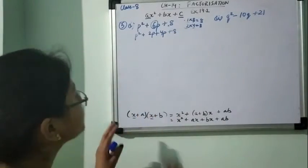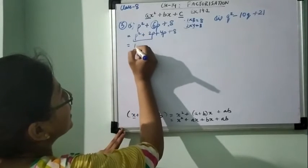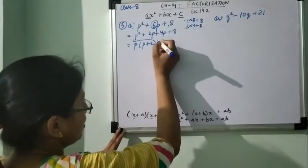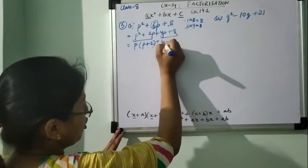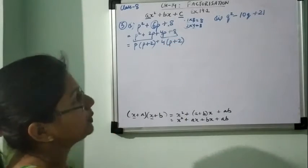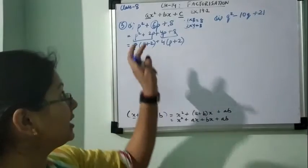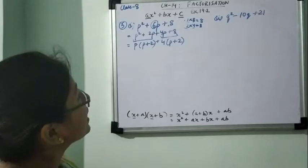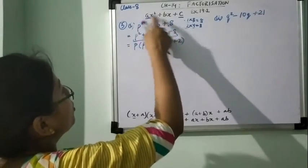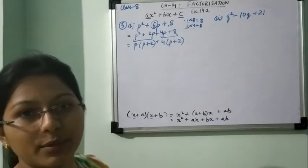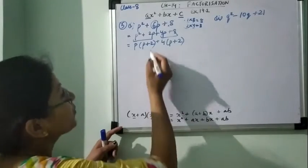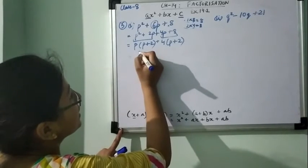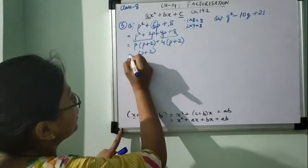Now there are 4 terms. From the first 2 we can take out p as common - in bracket I will have (p + 2). From the last 2 I can take out 4 as common - in bracket I will have (p + 2). Now two brackets are common, so that can come out as common: (p + 2)(p + 4). So this is the complete factorization of the first part.